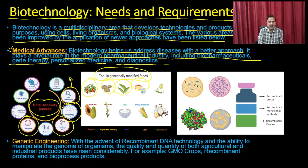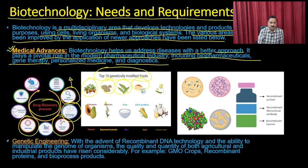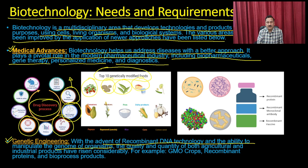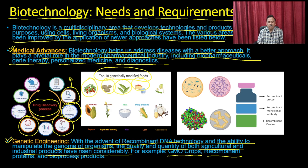Apart from medical advances, biotechnology has contributed immensely in improving quality of human life through genetic engineering. With the advent of recombinant DNA technology and the ability to manipulate the genome of organisms, the quality and quantity of both agricultural and industrial products have been improved. For example, you can have genetically modified crops, recombinant proteins, and bioprocess products.